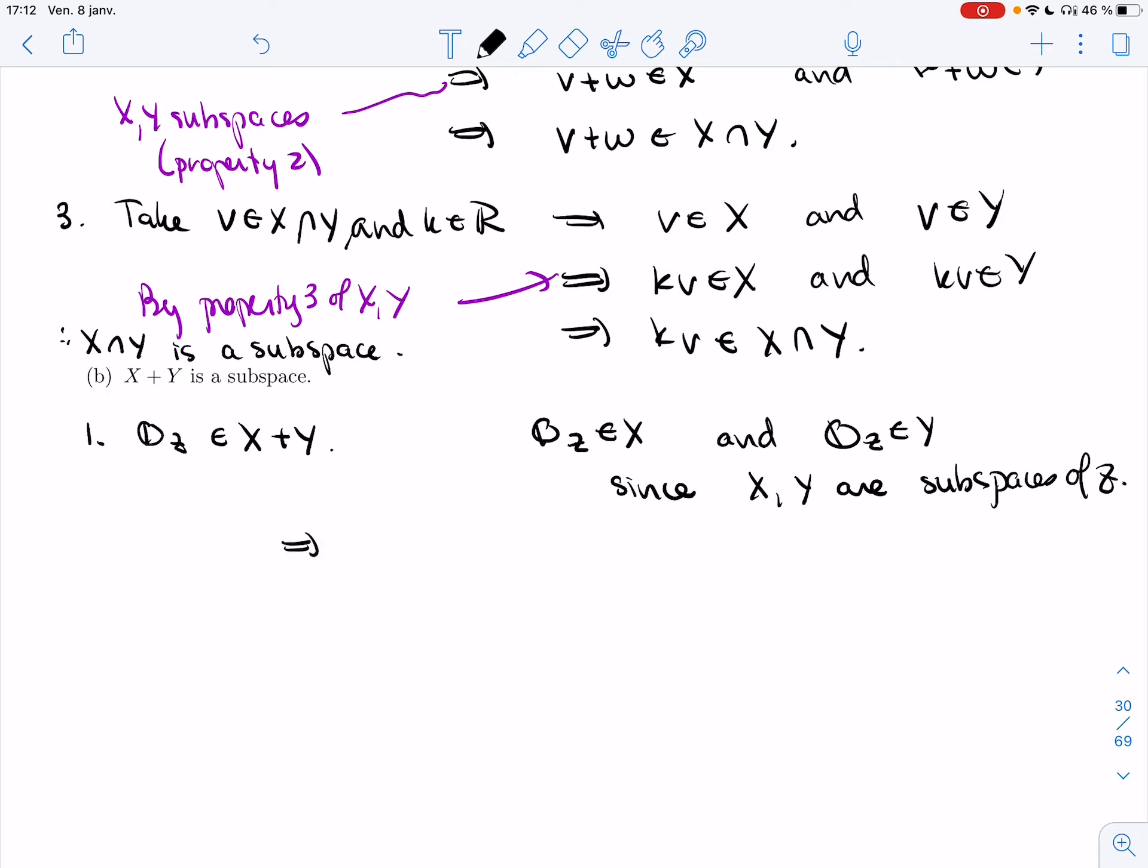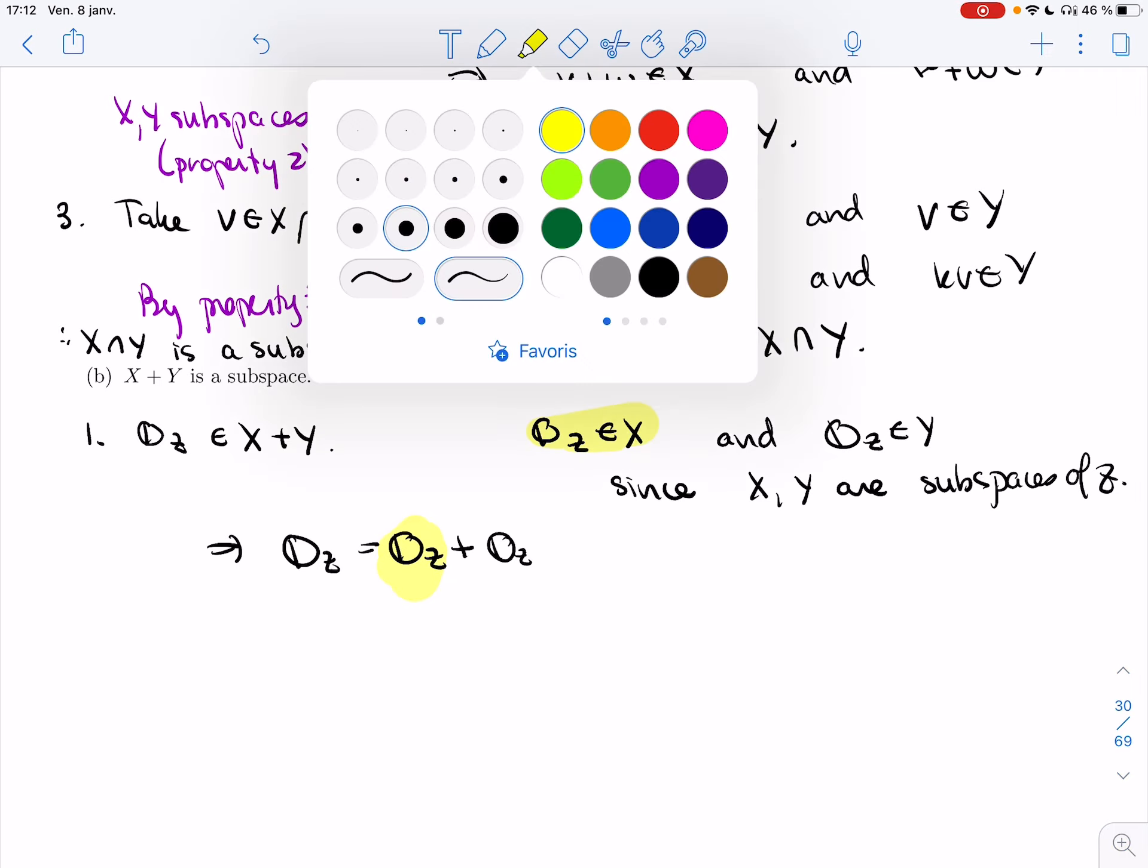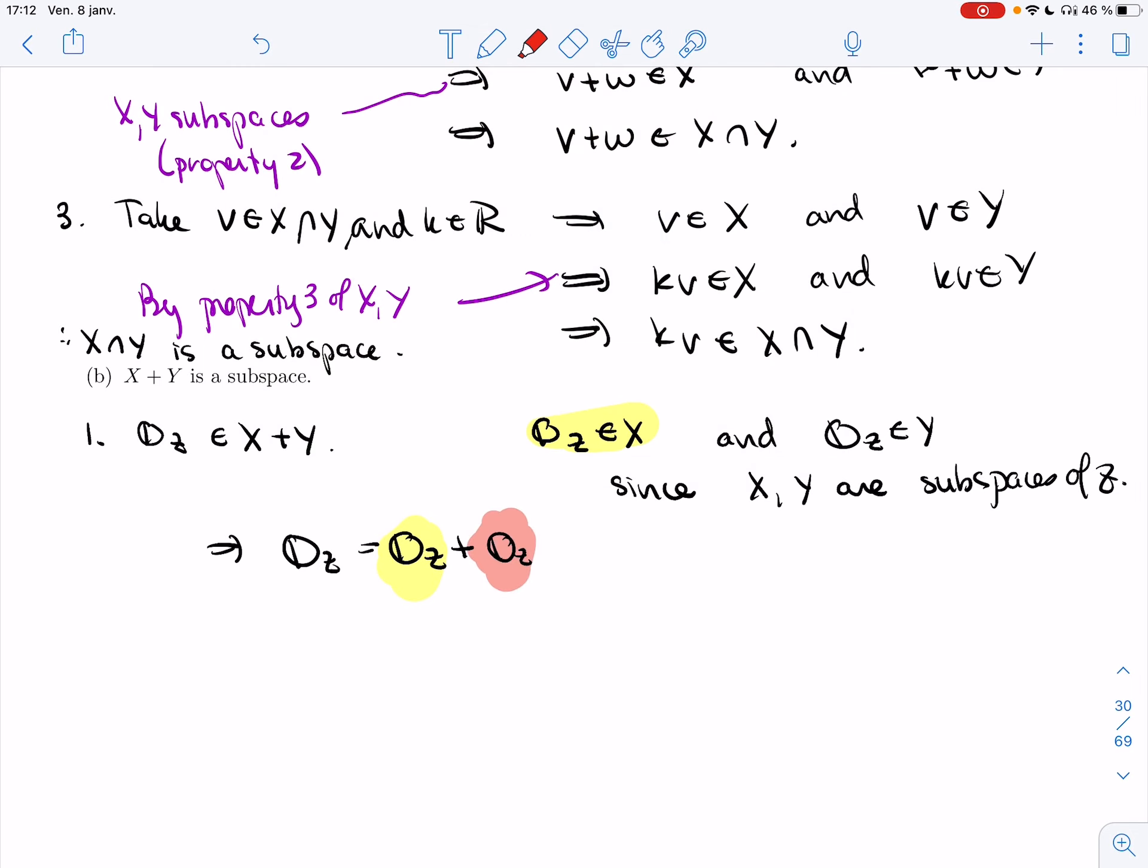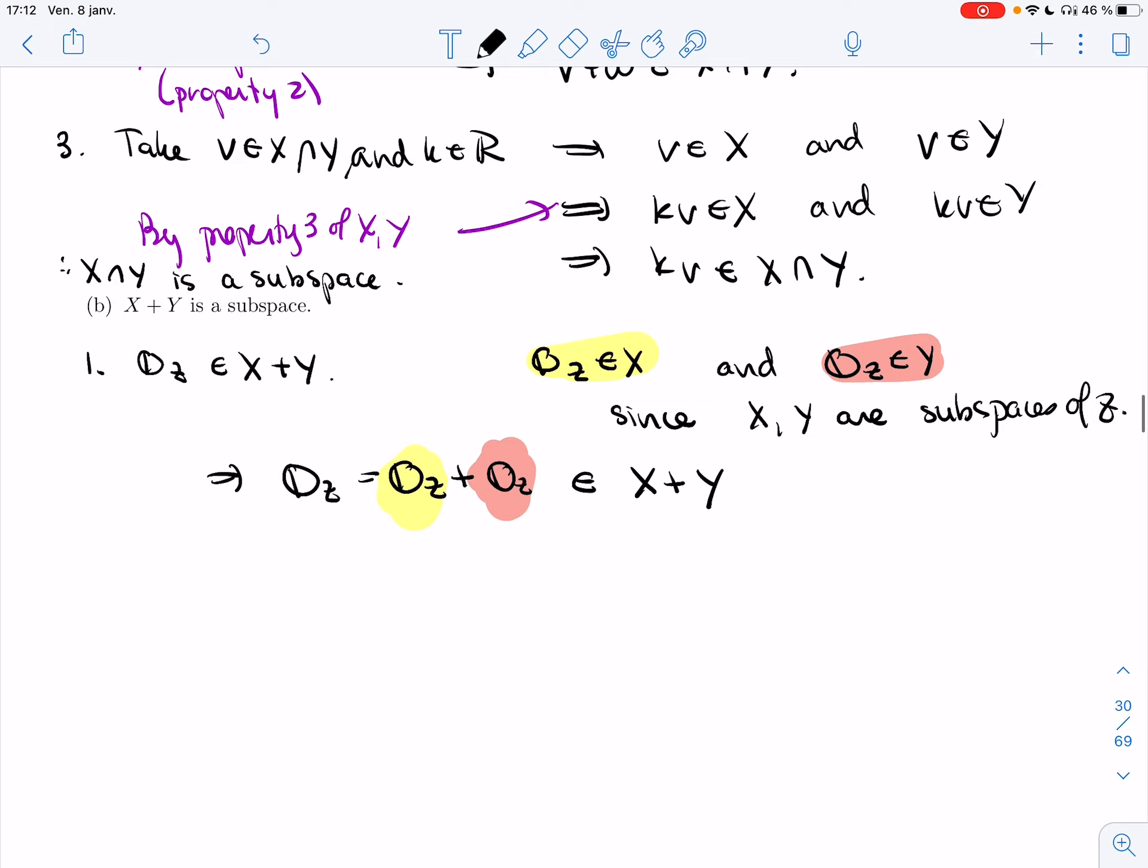And so that means that if I add them, I'm still going to get the zero vector. So not zero vector, zero element. But now I could see it as something in X plus something in Y, and so this is in X plus Y. As soon as I can write it as a sum of something yellow with something red, it's in X plus Y.